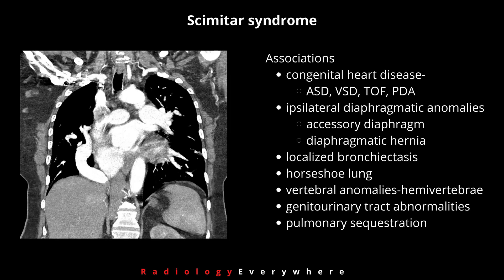There are a number of associated conditions with Scimitar syndrome, which can include congenital heart disease like ASD, VSD, tetralogy of Fallot, and PDA; or ipsilateral diaphragmatic anomalies like accessory diaphragm or diaphragmatic hernia; or localized bronchiectasis, pulmonary sequestration, vertebral anomalies like hemivertebrae, and genitourinary abnormalities.